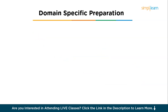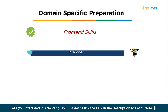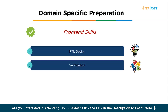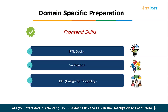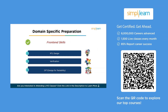Once you have built a strong foundation in the core topics, it's time to start thinking about where you want to specialize. Broadly, you will choose between front-end roles and back-end roles. For the front-end role, if you are more interested in coding hardware, verifying designs, or making circuits testable, you'll likely gravitate towards RTL design, verification, or DFT. Let us discuss each one of them.